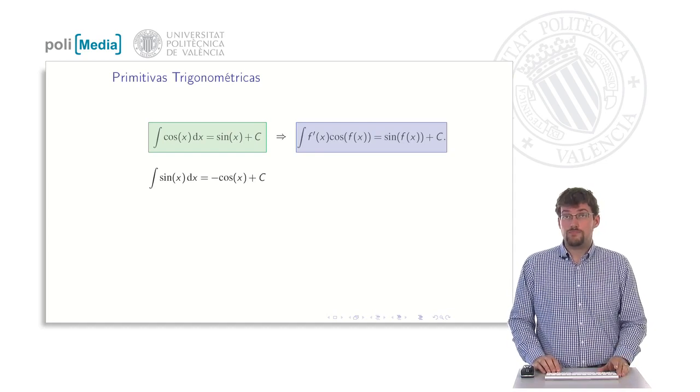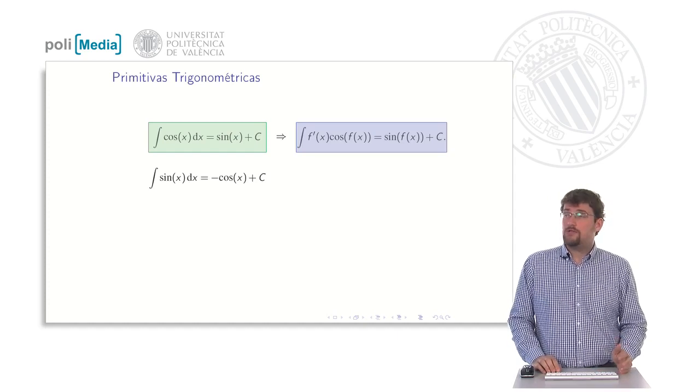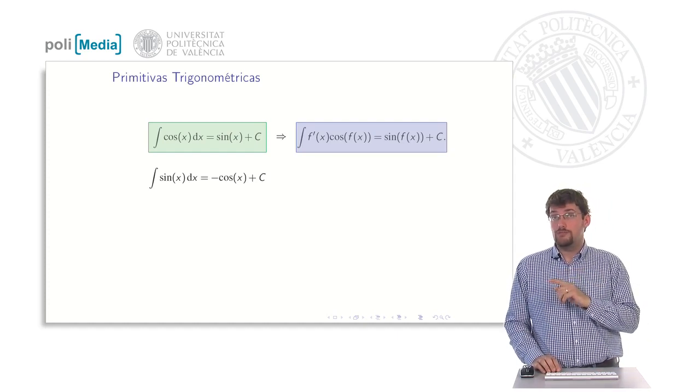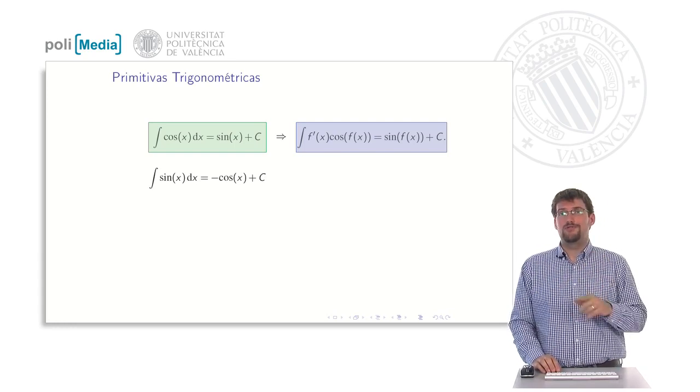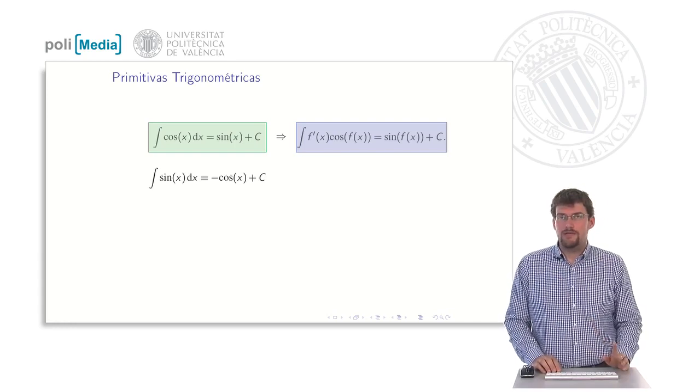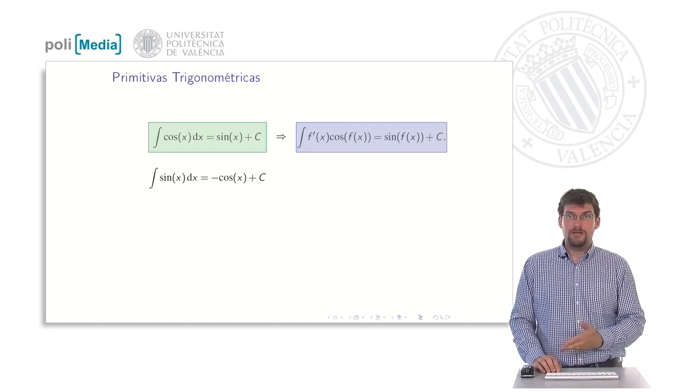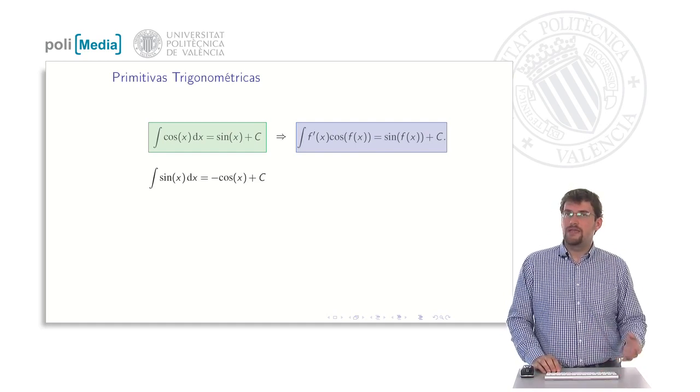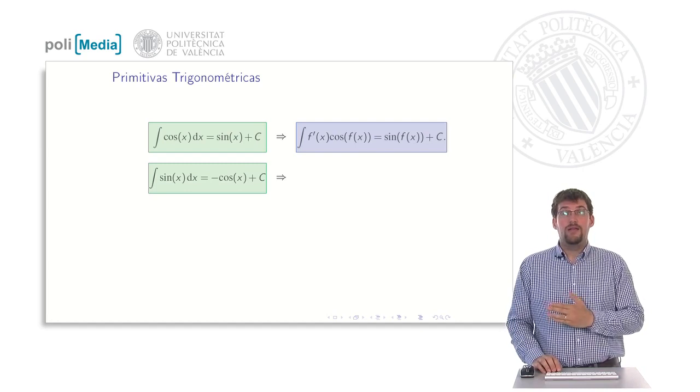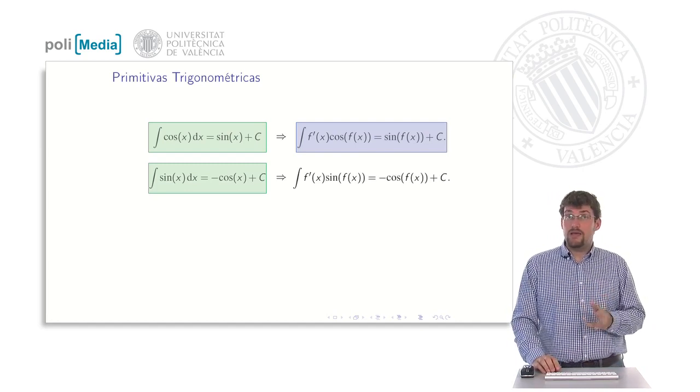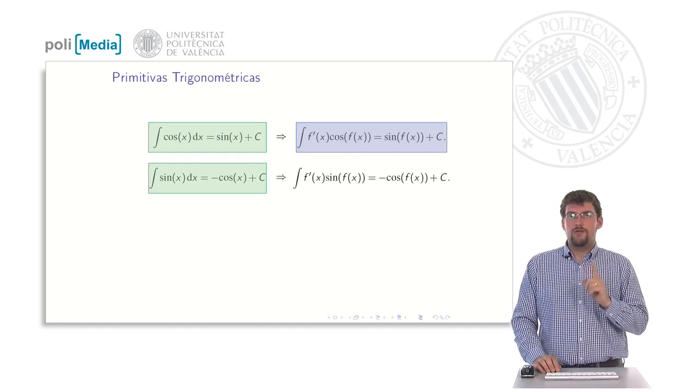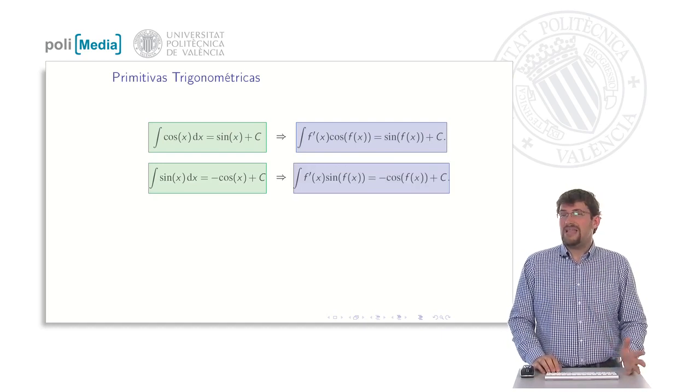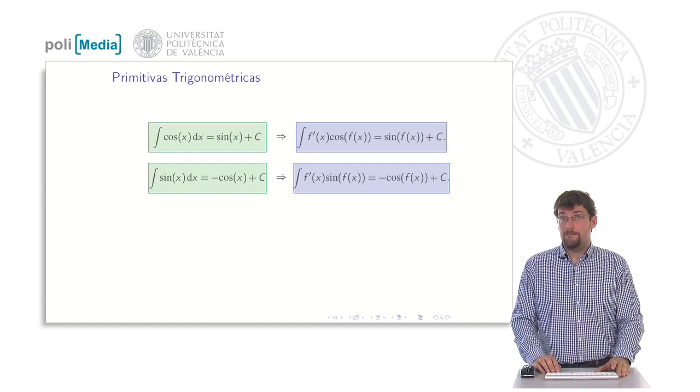And now we know that the derivative of the cosine is the minus sin, and therefore we know that the derivative of the minus cosine is the sin. And by working backward, we know that the primitive of the sin is the minus cosine, plus of course the constant. This would be immediate, therefore we can quickly go to the pseudo-immediate, just by adding where there is an x, a function of x, and in the integrand, the derivative of f multiplying. This gives us the pseudo-immediate.